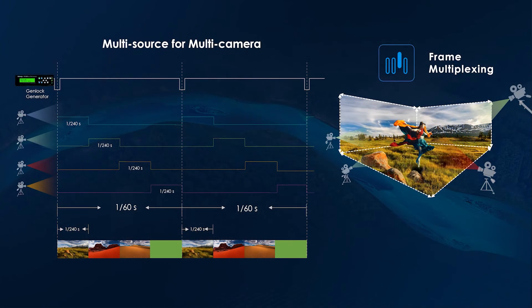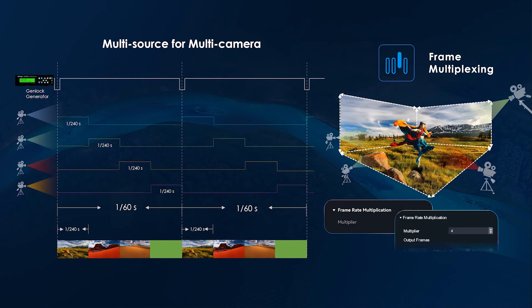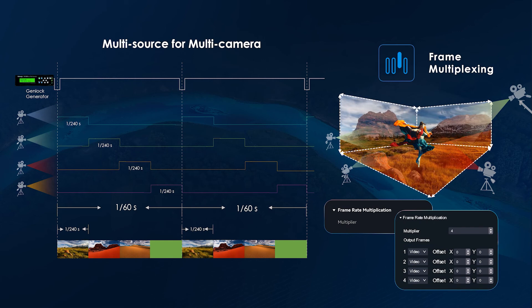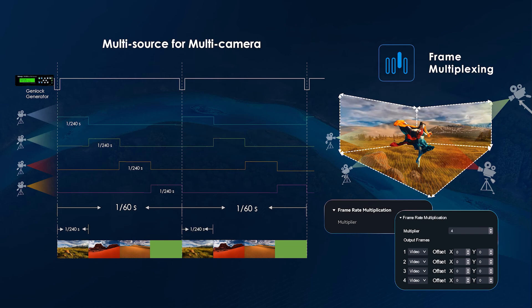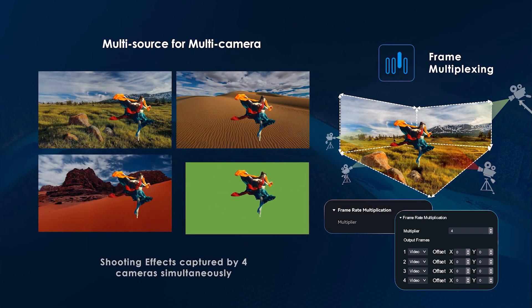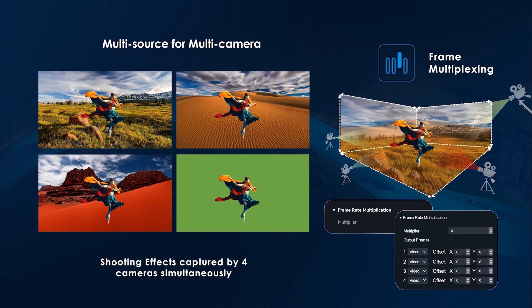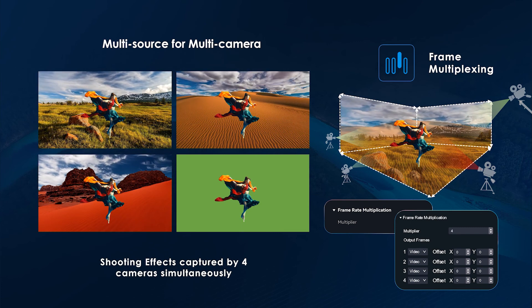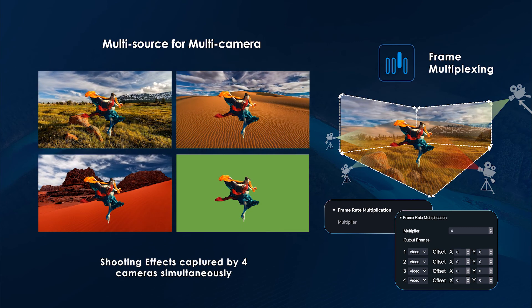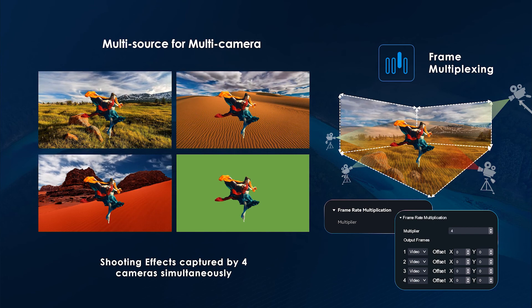In virtual production, and where there are multiple video feeds in the same time field that need to be reframed, VMP includes frame multiplexing. This allows the operator to reframe multiple video feeds in the same time field. And when VMP's frame multiplexing is combined with Genlock phase offset, the user can shoot just a single take, and yet still create multiple effects simultaneously.